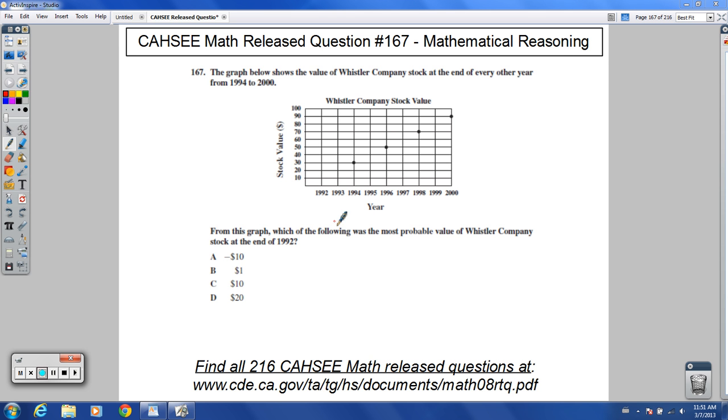From this graph, which of the following was the most probable value of Whistler Company stock at the end of 1992? 1992.